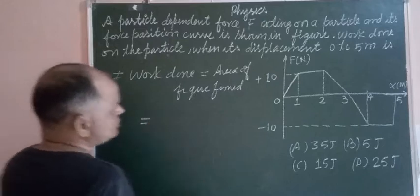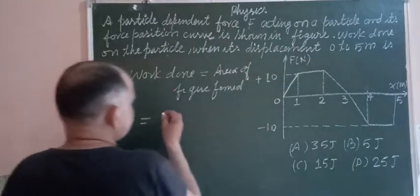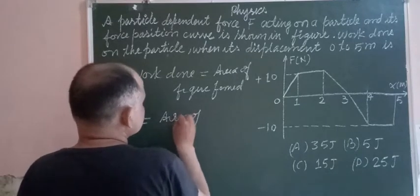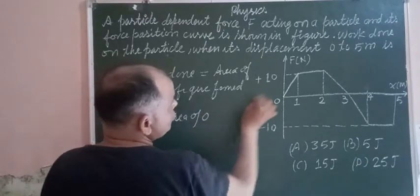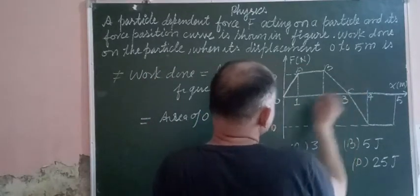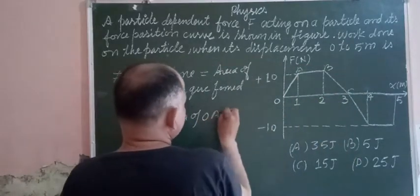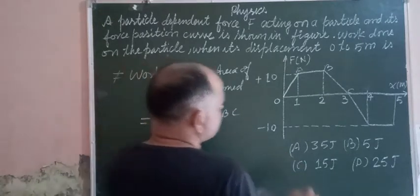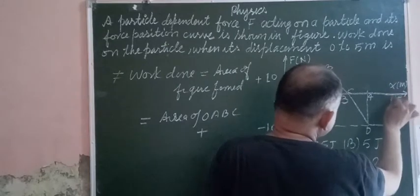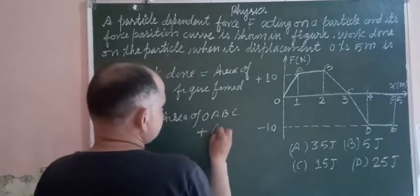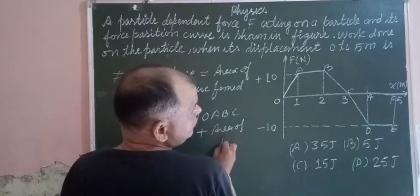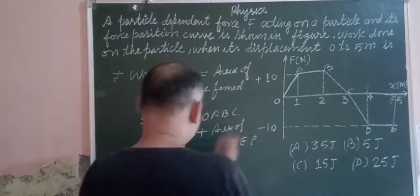The area of this part: area of region OABC plus area of region CDE, which equals F.